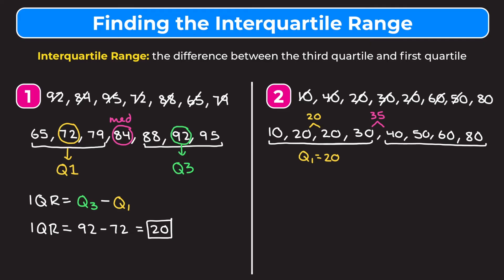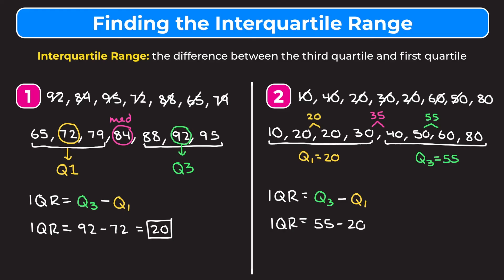To find the median of the top half, we find the average or middle of 50 and 60. You can add them and divide by 2, or just find the number directly in the middle — 55 is right in the middle, so Q3 is 55. Now we find the IQR: Q3 minus Q1 is 55 minus 20, which gives an interquartile range of 35. Hopefully this video helped you understand how to find the interquartile range — just find the difference between the third quartile and the first quartile.